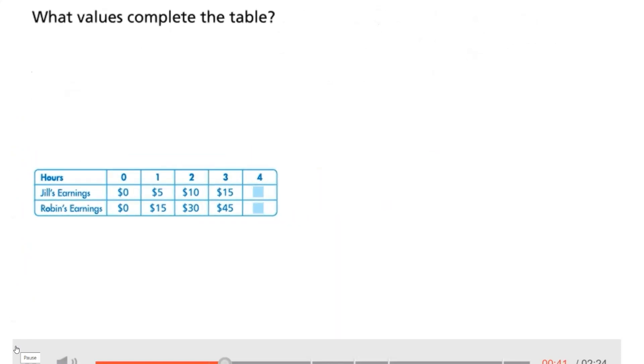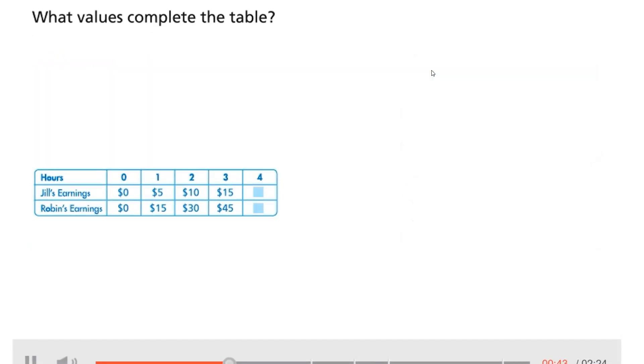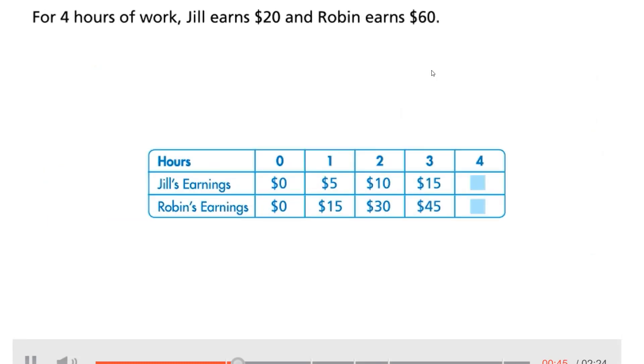What values complete the table? Select your answer. For four hours of work, Jill earns twenty dollars and Robin earns sixty dollars.